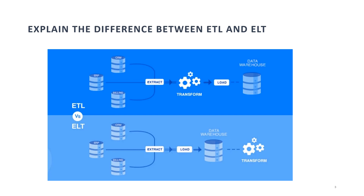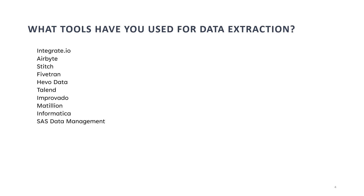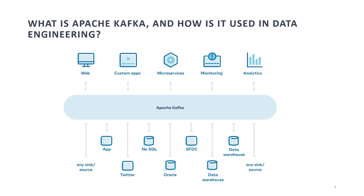In cloud environments, data can be loaded into storage platforms first and then transformed using distributed processing frameworks like Apache Spark or Hadoop. What tools have you used for data extraction? I have used tools like Apache Spark, Apache NiFi, and Talend for data extraction tasks. Additionally, I have experience with cloud-native services such as AWS Glue and Google Dataflow for extracting, transforming, and loading data at scale, providing capabilities for connecting to various data sources and orchestrating data workflows efficiently.